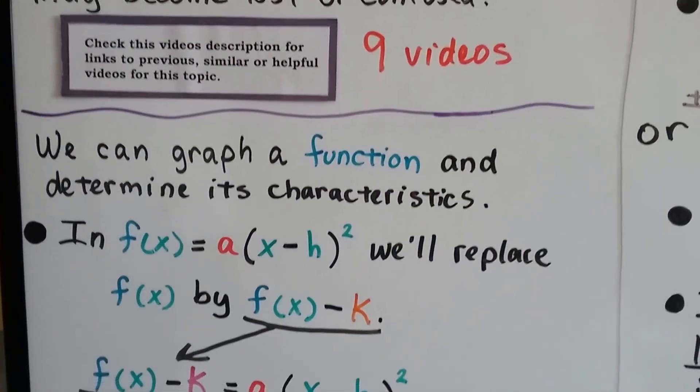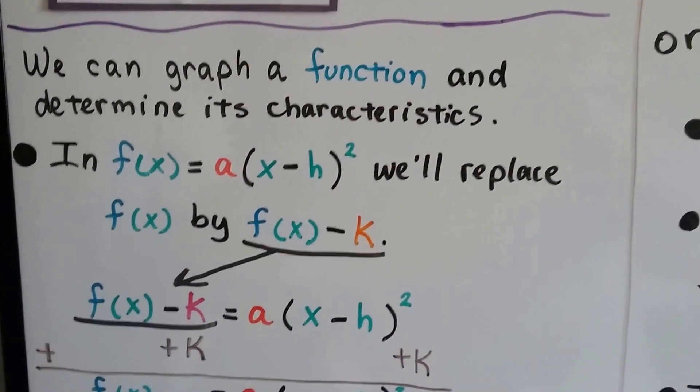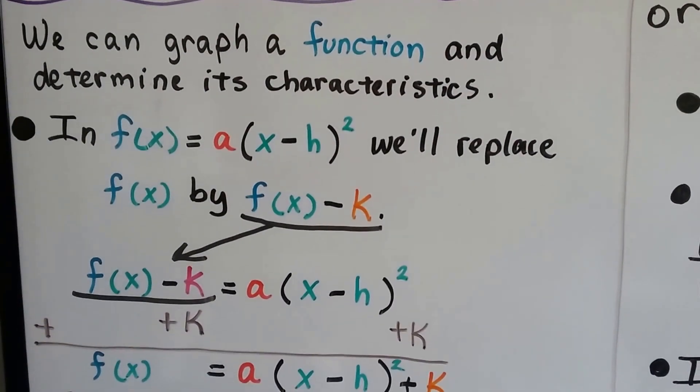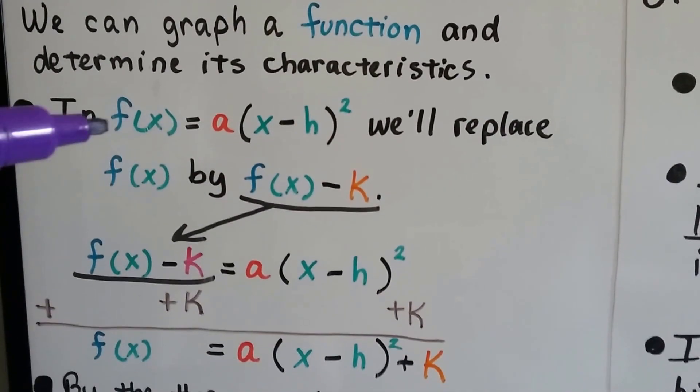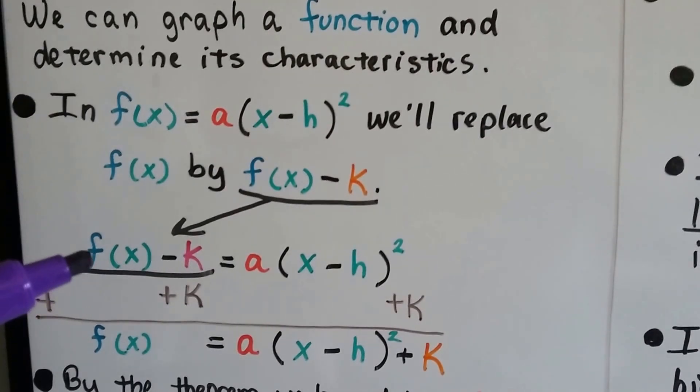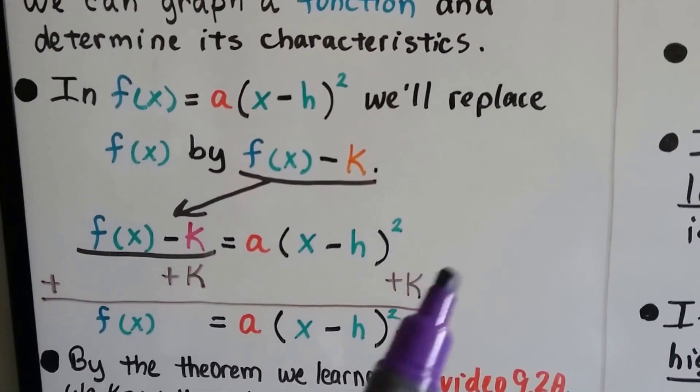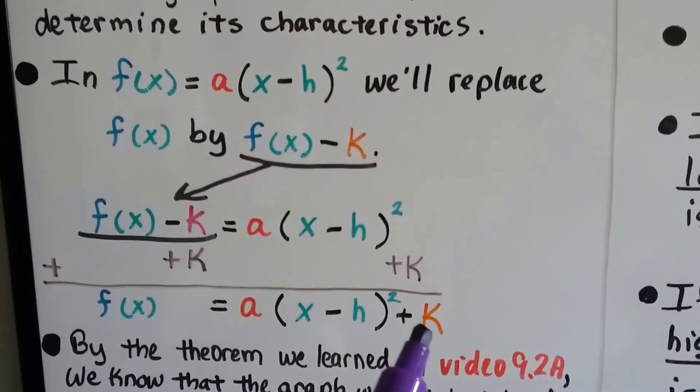We can graph a function and determine its characteristics. In the function f(x) = a(x - h)², we can replace this f(x) with f(x) - k. If we add k to each side of the equation, we end up with the plus k over here.